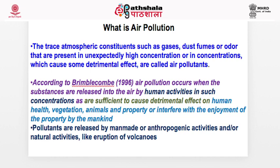The fundamental question is: what is air pollution and what are air pollutants? Trace atmospheric constituents such as gases, dust, fumes, or odors present in unexpectedly high concentrations — or concentrations that can cause some detrimental effect — are air pollutants. Basically, substances present in the atmosphere that have some detrimental effect, that can harm or are toxic to us, are called air pollutants. The definition of air pollutants varies across different books. I have taken this definition from a celebrated atmospheric chemist, Peter Brilcom.